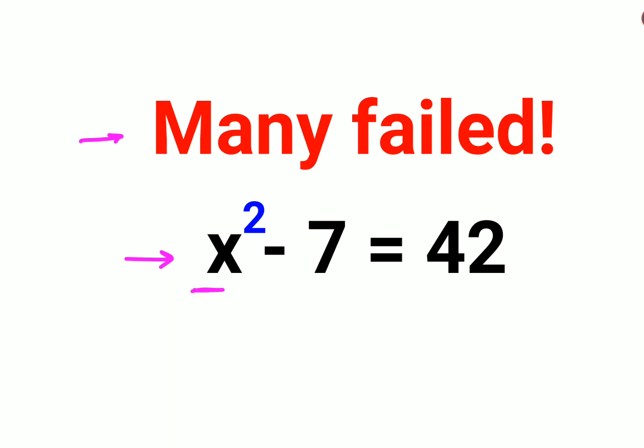Now whenever you want to find the value of a variable, what you should do is try to switch all the numbers from one side to the other side where you will have just numbers. So x² - 7 + 7 = 0, which gives us x², and 42 + 7 gets you 49.